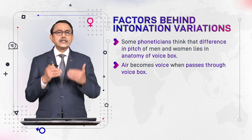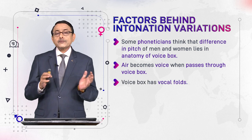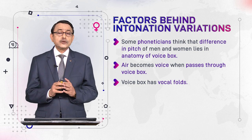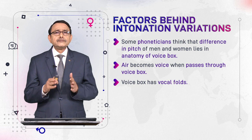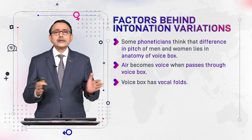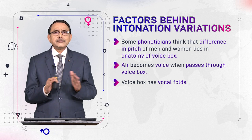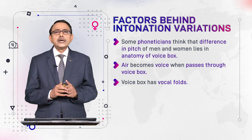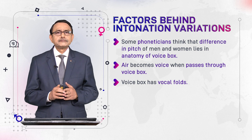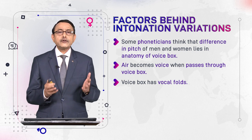Air that comes out of the lungs passes through this voice box. The voice box has vocal folds. Inside the voice box, air interacts with the vocal cords: sometimes the vocal cords block the air and close the passage; sometimes air passes through them and they vibrate; and sometimes the vocal cords are wide apart. They are flexible and can adopt different forms or shapes.